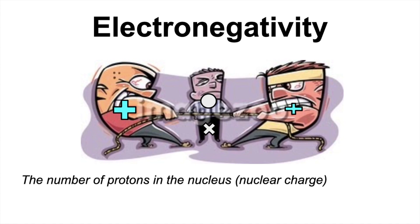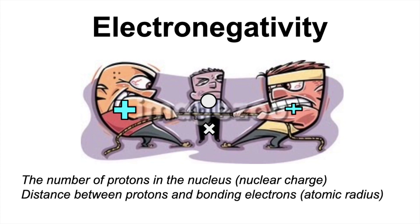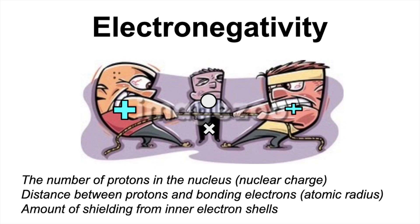The first factor is the number of protons in the nucleus, or the nuclear charge as it's sometimes called — that's obviously going to influence the strength of this attraction. Another factor is the physical distance between the nucleus and the bonding electrons, which is the atomic radius. And another factor is the amount of shielding from the inner electron shells, which will block or shield the attraction between the nucleus and the bonding electrons.